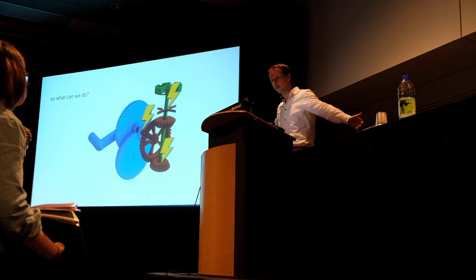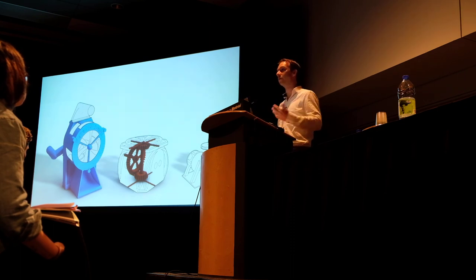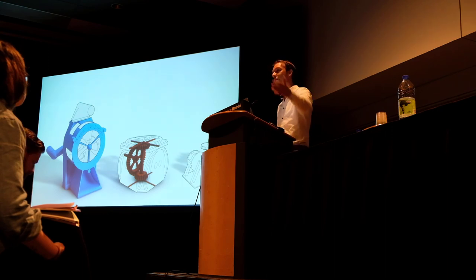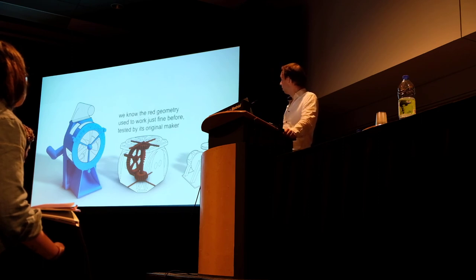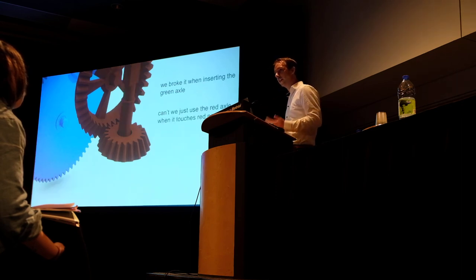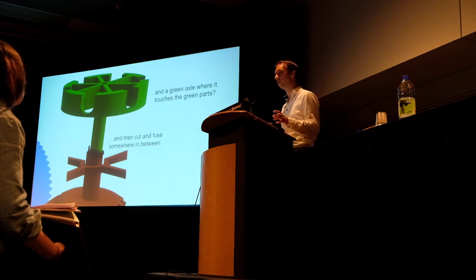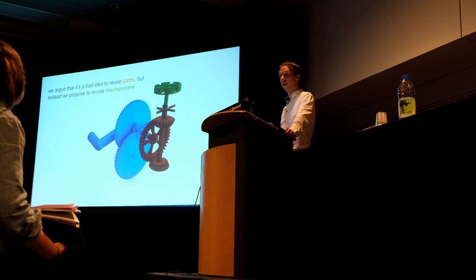So what can we do? Let's go back to where these models came from. In the original configuration each of these models worked — they were tested by a maker, fabricated, and performed their functionality. The red geometry used to work just fine; only when we inserted the green axle did we change that. So why not use the red axle wherever we touch the red geometry, and the green axle wherever we touch the green geometry? That leads to points in between where we need to cut and fuse the axles together — we chop inside the parts and recombine them there. We argue it's a bad idea to reuse parts; instead we propose to reuse mechanisms, in an approach we call mechanism-based reuse.